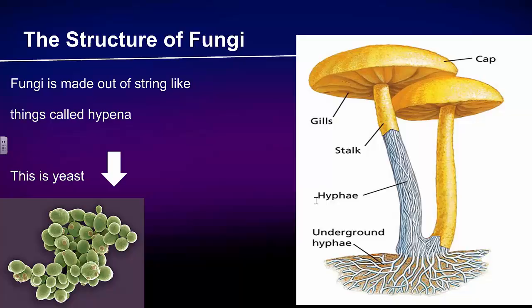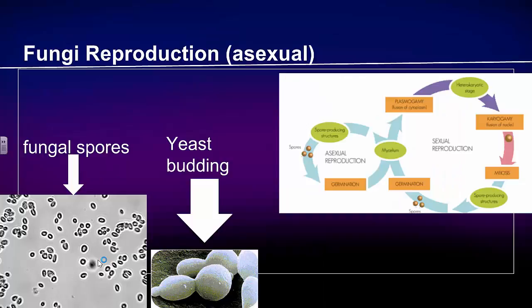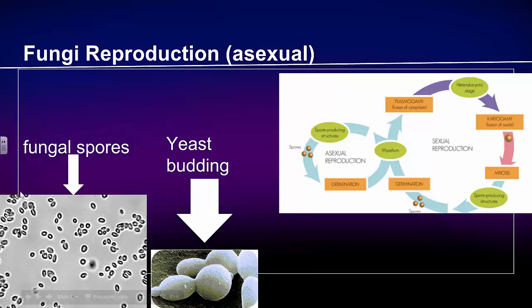Mycelium can be very big and is one of the largest living things. Fungi reproduce in two ways: sexually and asexually. They reproduce asexually by producing spores. You can see spores under a microscope here. Spores fly through the air until they reach another fungus.